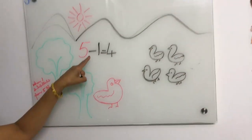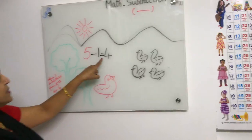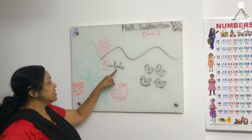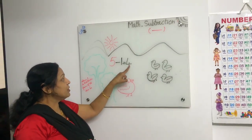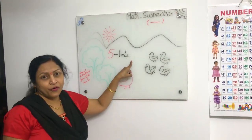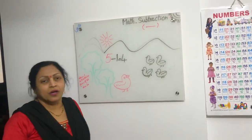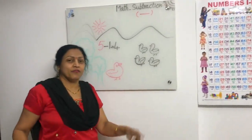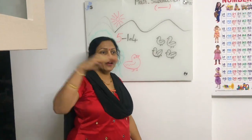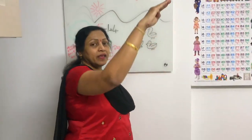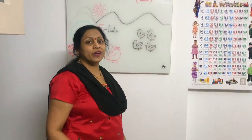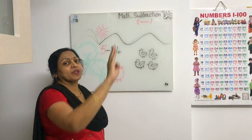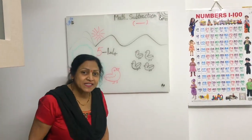This is the minus symbol. Five minus one is equal to four. Now, four little ducks went out one day, over the hills and far away.